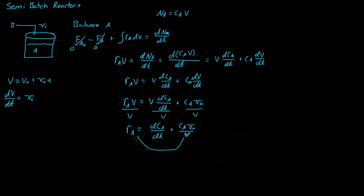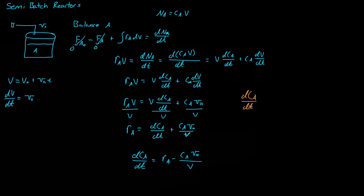Rearranging, the change in concentration of A with respect to time equals R_A minus C_A times nu-naught all over the volume. Substituting the volume expression (V₀ + nu-naught·t), the final design equation for a semi-batch reactor is: dC_A/dt equals R_A minus C_A times nu-naught, divided by the quantity (V₀ plus nu-naught times t).